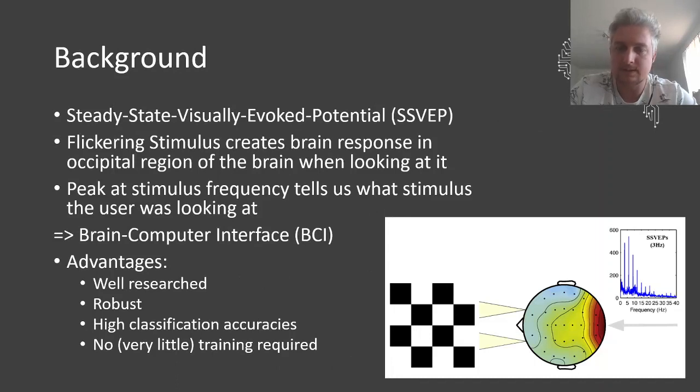So what is SSVEP? SSVEP stands for Steady State Visually Evoked Potential and it is actually a brain response which is evoked when you are looking at visual stimuli which are flickering in a certain frequency. You can measure this potential at the back of your head and at your primary visual cortex, the occipital region.